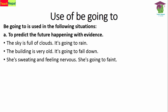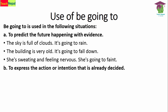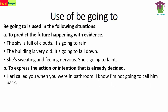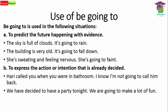'She's sweating and feeling faint — she's going to faint.' These are ways of predicting the future with evidence. If you say 'it will rain,' there is no evidence, but with 'be going to' we have visible evidence. The second use of 'be going to' is to express an action or intention that is already decided — a planned activity. For example: 'How did you call? I'm not going to call him back' — meaning you have already planned.